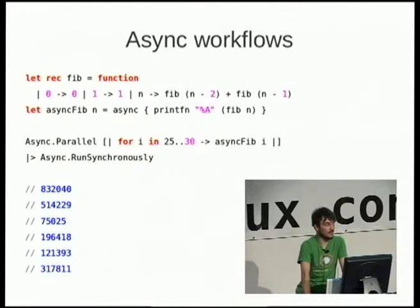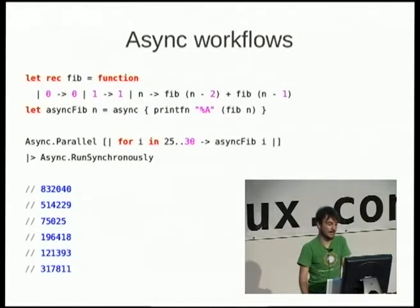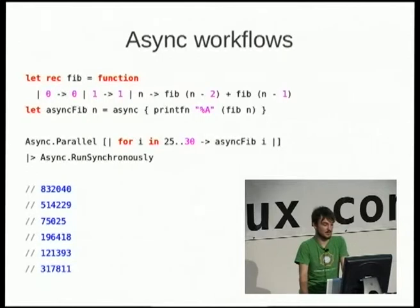Computation expressions are used in asynchronous workflows. You can define a Fibonacci function as an asynchronous computation that prints out the Fibonacci sequence. You can run them in parallel, and then async.RunSynchronously will wait for each of those. You can see it prints out each one.